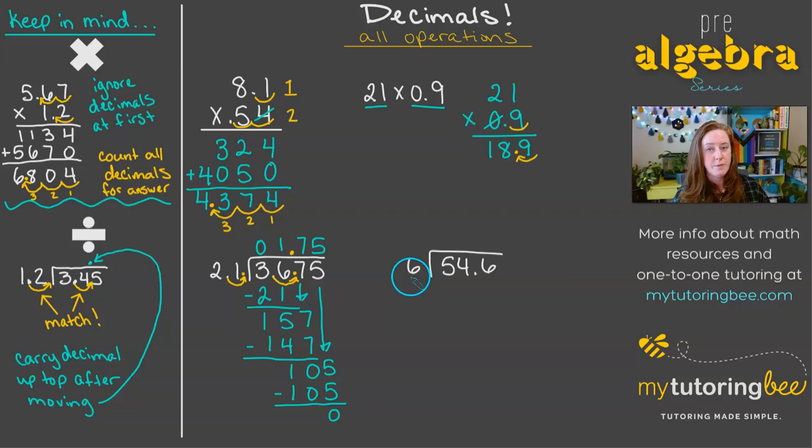Here we have a decimal being divided by a whole number. So again, remember what I said about the outside number kind of being the one that tells us what to do with the decimal point. Since this one doesn't have a decimal point, it's already a whole number. That means we're not moving the decimal at all. So I'm just going to go ahead and bring up this decimal here and then start dividing.